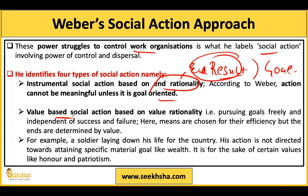For example, a soldier laying down his life for his country — his action is not directed towards attaining a specific material goal like wealth. A soldier who gives his life in war doesn't expect a lot of money or a job for his family after his death. He gives his life for a certain value. The end result may be death, his children may become orphans, his parents may have no support — but his goal is value-based, not materialistic. The value-based goal is serving the country.